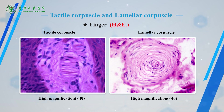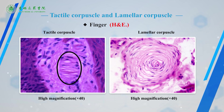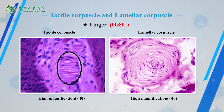Obtained from finger, the superficial to deep layers of the specimen are stratified squamous epithelium called epidermis, and a regular dense connective tissue called dermis. At the boundary between epidermis and dermis, the connective tissue protrudes into the epithelium forming papillae of dermis. Some deeply stained elliptic bodies can be seen among the papillae, which are tactile capsules. The capsule is surrounded by a connective tissue capsule, and inside are several layers of light cells arranging transversely. The nerve fibers spiral into the elongate structure of the capsule.